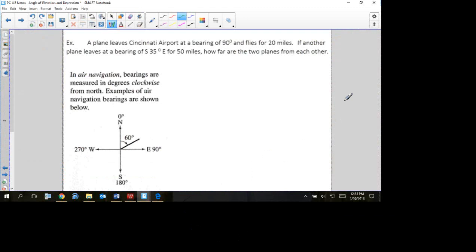Okay, our last example starts with a little side note. In air navigation, bearings are measured in degrees clockwise from north. A table of air navigation bearings are shown below.